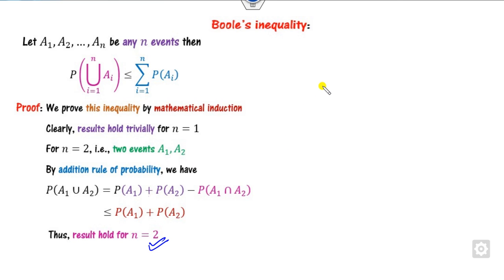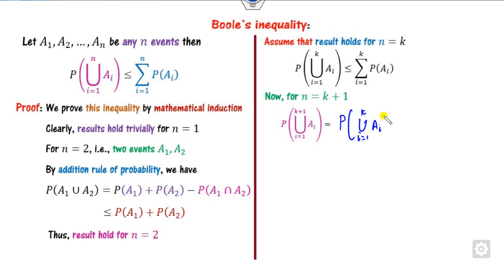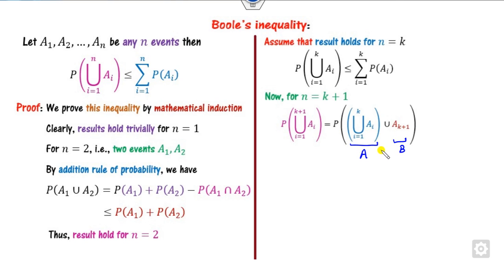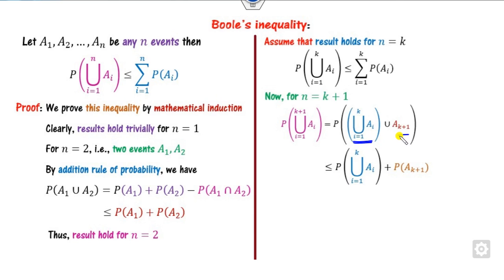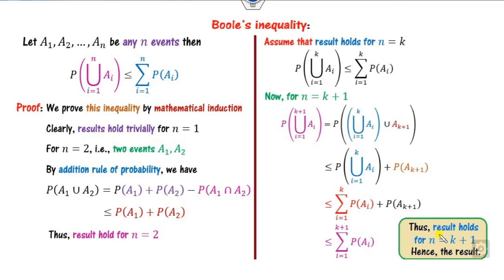For the inductive step, assume the result is true for N=K. We start with N=K+1. We can write the union of K+1 events as the union of the first K events (call it A) and the (K+1)-th event (call it B). Applying the two-event case and then the induction hypothesis, we get that the probability is less than or equal to the summation of probability of A_i for i from 1 to K+1. Hence, Boole's inequality is proved.